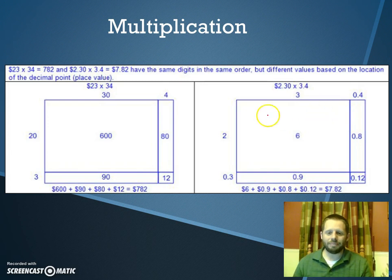The strategy works the exact same. You're still going to multiply 2 times 3, you get 6. 2 times 0.4, so 0.4 double it, you get 0.8. Then 0.3 times 3, so 0.3 plus 0.3 plus 0.3, which is 0.9. And then 0.3 times 0.4. That one might be a little trickier, but you're still doing 3 times 4 with two decimal places, so 0.12. Then you're simply adding those products together, just like we did before. And you get $7.82.